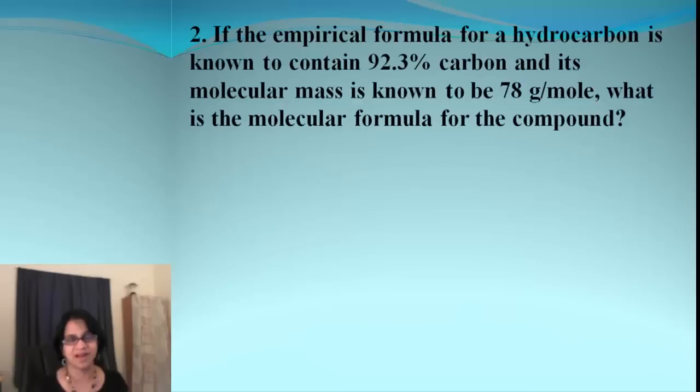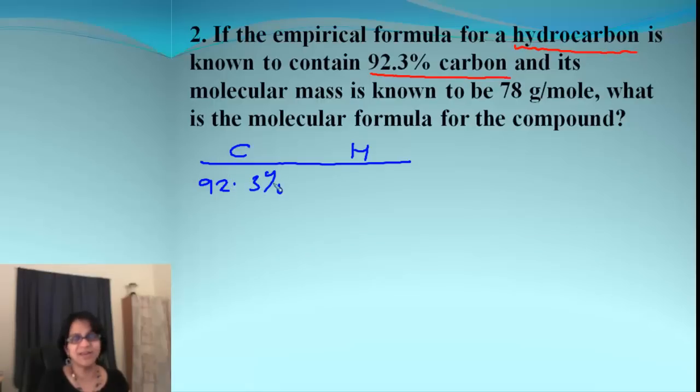Let's do one more. This one looks tricky because we need to actually find the empirical formula. It's not given to us. What we know is it's a hydrocarbon. Hydrocarbons contain carbon and hydrogen. We know the percentage for carbon is 92.3%. So how much will be hydrogen? That will be simply 100 minus 92.3 because the total must be 100. When we do that, I got 7.7%.